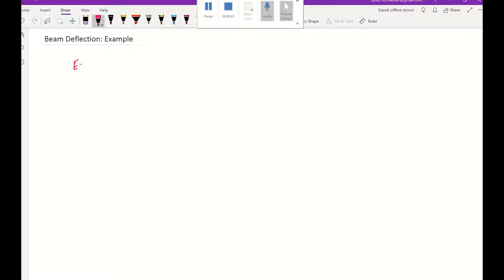So this is our example. We have a simply supported beam with pin supports at A and B. There's a concentrated load right in the middle, P. This concentrated load is 200 pounds in the U.S. system. This is 12 inches and this is 12 inches.